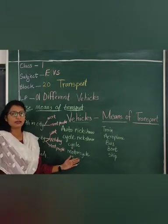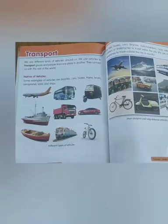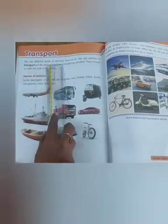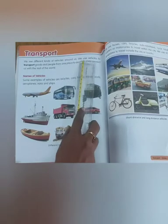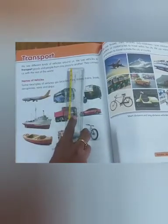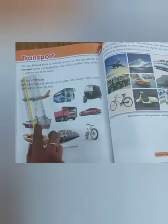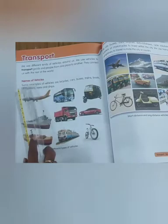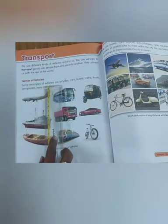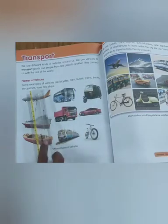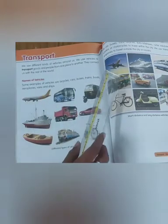Now we will see the reader. Open your reader, page number 124. We see different kinds of vehicles around us. We use vehicles to transport goods and people from one place to another. They connect us with the rest of the world. Names of vehicles: some examples are bicycle, cars, buses, trains, boats, aeroplanes, vans, and ships.